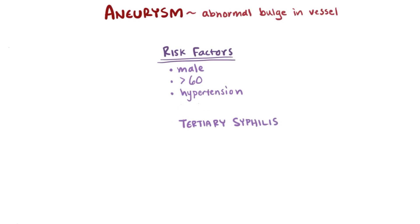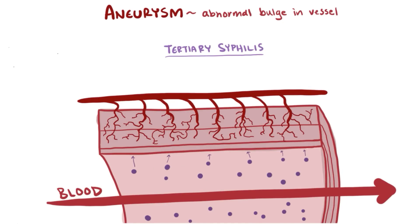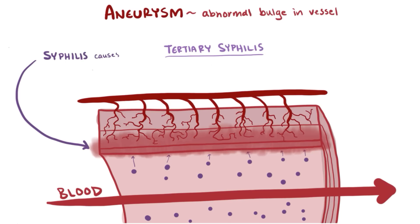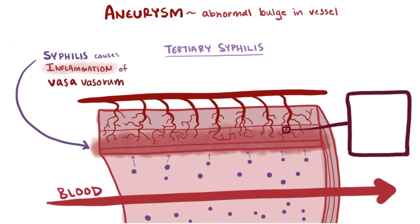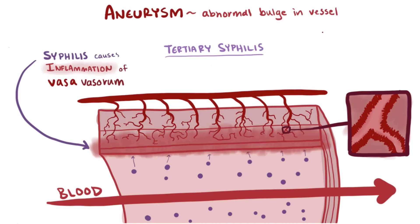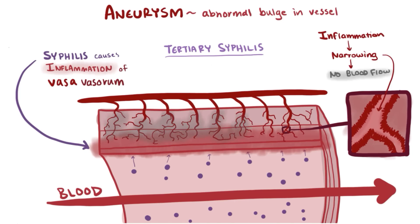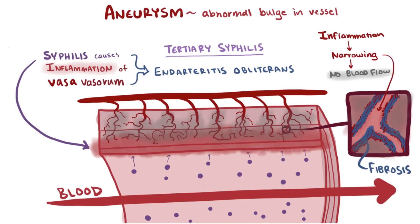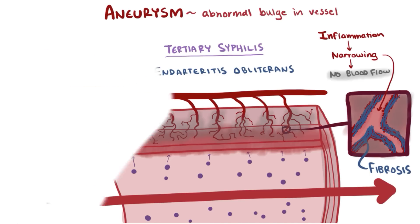If we look at tertiary syphilis, it affects the vasa vasorum — syphilis causes inflammation in the tunica intima of the vasa vasorum, which leads to a narrower lumen and restricted blood flow to the vascular walls of the thoracic aorta, causing atrophy. The name for this vasa vasorum inflammation is endarteritis obliterans. In tertiary syphilis, the inflammation causes fibrosis and scarring on the walls, creating a tree bark-like texture.